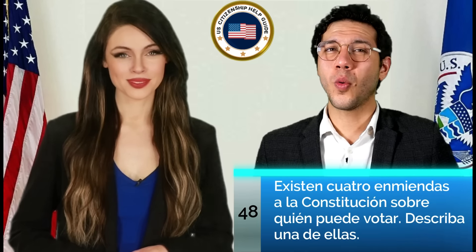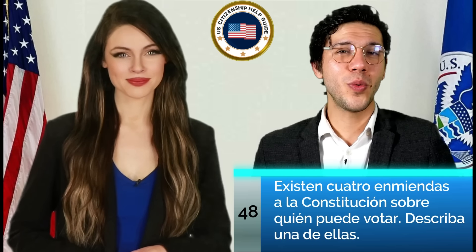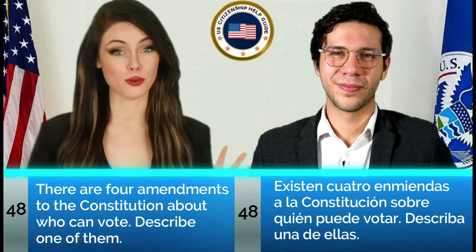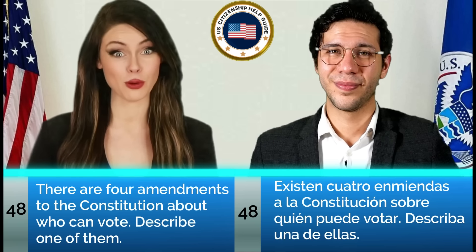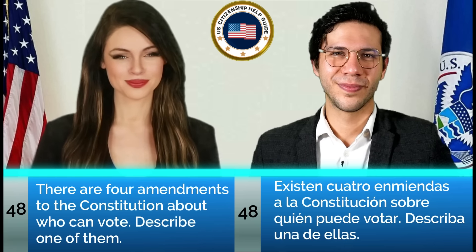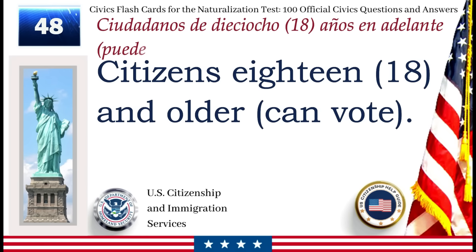Existen cuatro enmiendas a la Constitución sobre quién puede votar. Describa una de ellas. There are four amendments to the Constitution about who can vote. Describe one of them. Ciudadanos de 18 años en adelante pueden votar. Citizens 18 and older can vote.